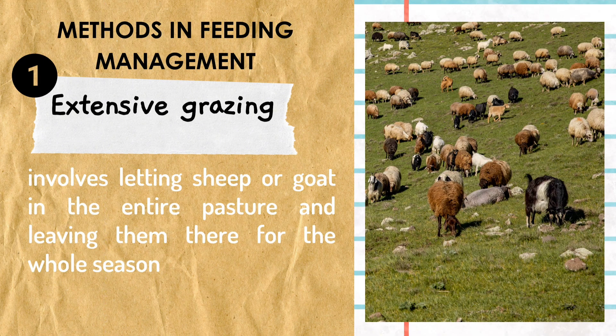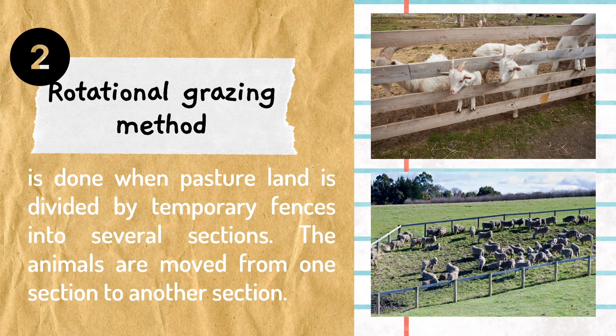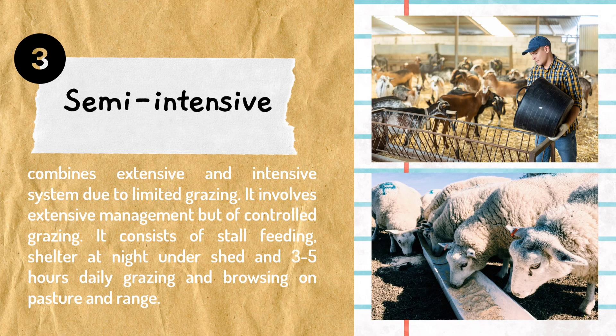Four methods of feeding management: first, extensive grazing — it involves letting sheep or goats in the entire pasture and leaving them there for the whole season. Rotational grazing is done when pasture land is divided by temporary fences into several sections; the animals are moved from one section to another. Semi-intensive combines extensive and intensive systems; due to limited grazing, it involves extensive management but with controlled grazing.